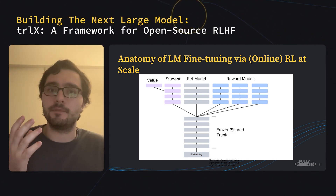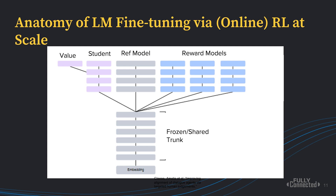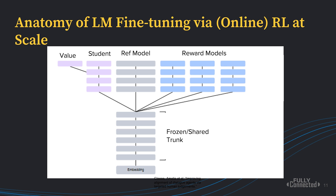This is a complex process. At training time, you have many different models which you need to hold in memory. First, you need the model you're fine-tuning — the student model — which you can think of as your policy, and you also need the value head of this policy, used for Proximal Policy Optimization or PPO. The value head tries to learn and approximate the reward that a given response will generate. Additionally, we have a frozen reference model, which produces a KL control penalty enforcing that the student model doesn't overfit to the reward too hard. And we also need to hold the reward model in memory, which can be quite large. Altogether, treating each of these as separate models requires a lot of compute and memory.